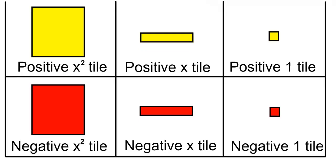The large yellow square tile is represented by positive x squared. The yellow rectangular tile is represented by positive x, and the small yellow square tile is represented by positive 1.